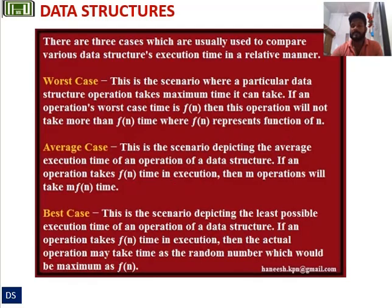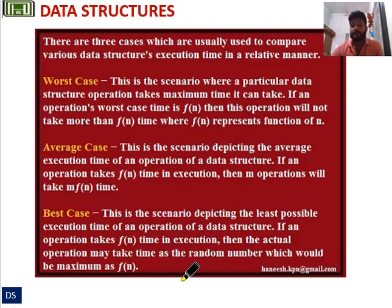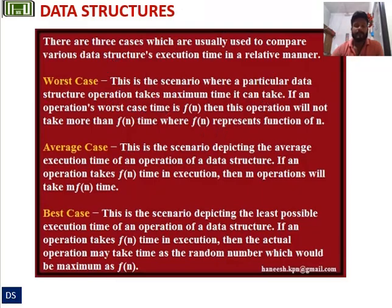Now, moving to best case. This is the scenario depicting the least possible execution time of an operation of a data structure. If an operation takes f(n) time in execution, then the actual operation may take time as a random number which would be maximum as f(n). These three cases are related to time in asymptotic analysis: best case, average case, and worst case.